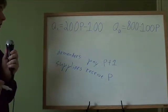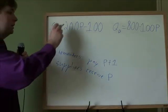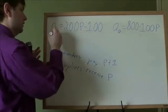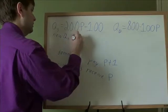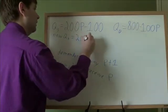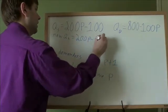So what does that do to our equations? Quantity supplied, nothing's happening to the suppliers now. So the new quantity supplied is the old quantity supplied, 200p minus 100.